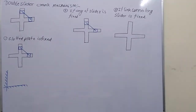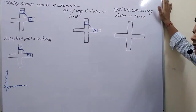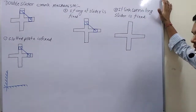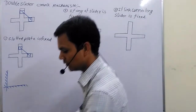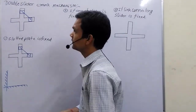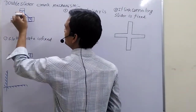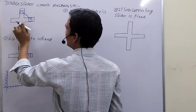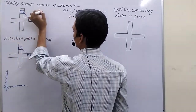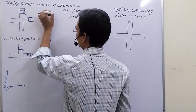Today we are going to discuss about the double slider crank mechanism. It is also a four-link mechanism, and you can see it has a first link connecting two sliders: a first slider, a second slider, and a slotted frame. In this mechanism, there are two sliding pairs and two turning pairs.